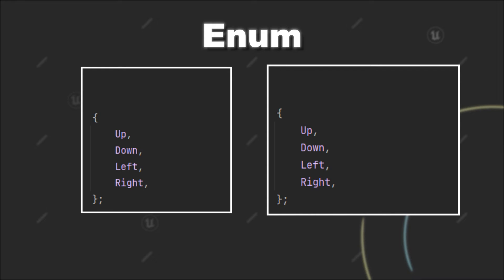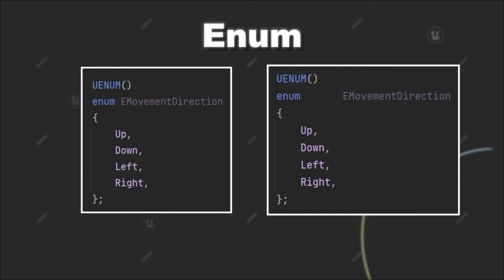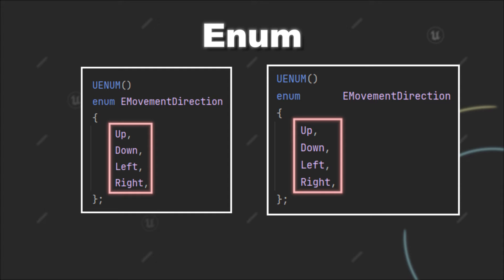What you need to use to define an enum in Unreal Engine is the UENUM macro, the enum keyword, and the name for your custom enum type. This name should always start with an uppercase E. As you can see, we can define the possible options inside the enum by using simple names.